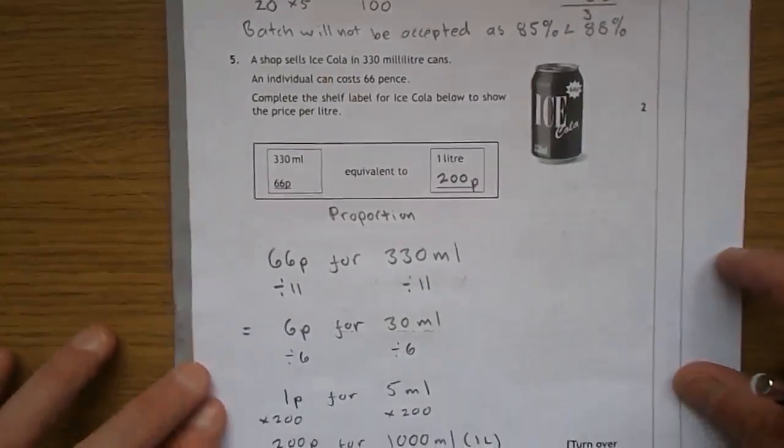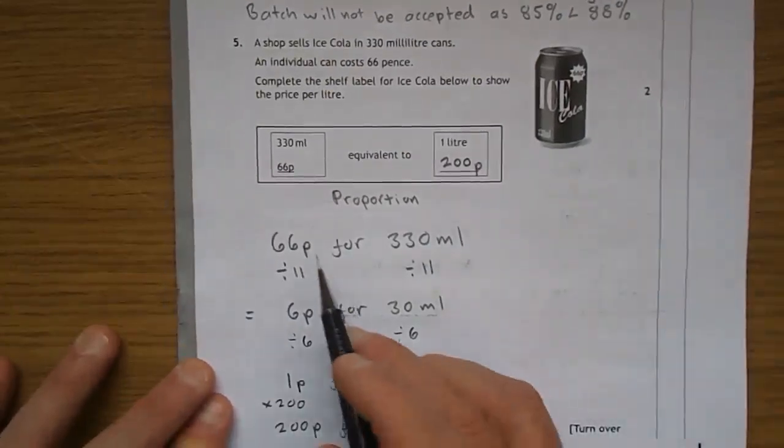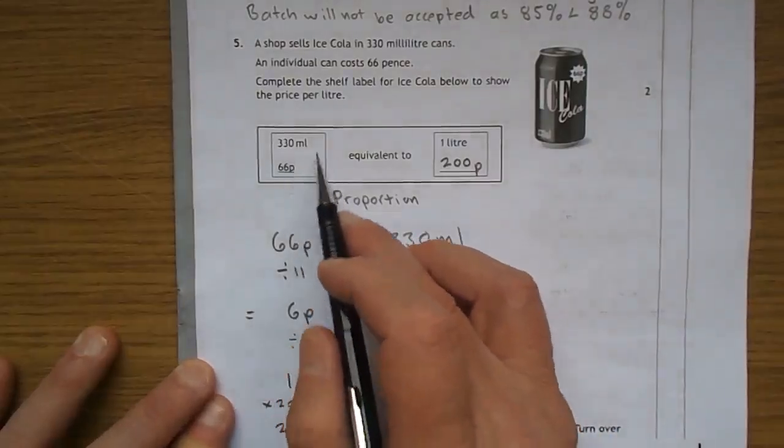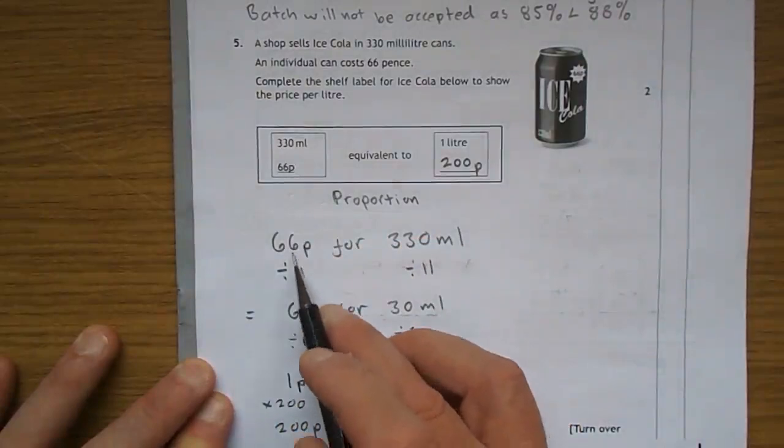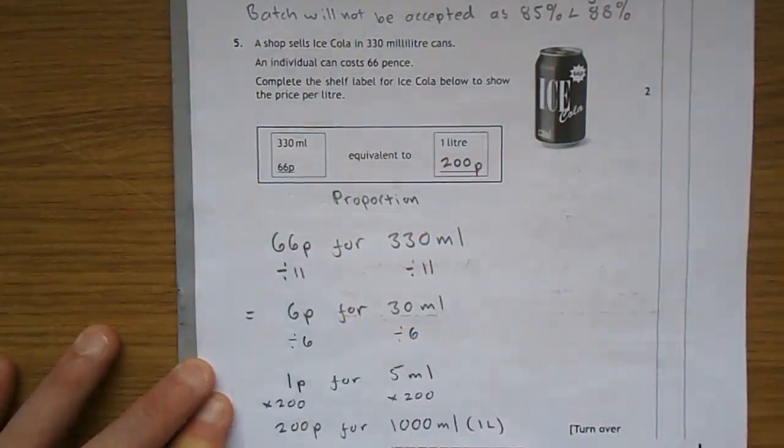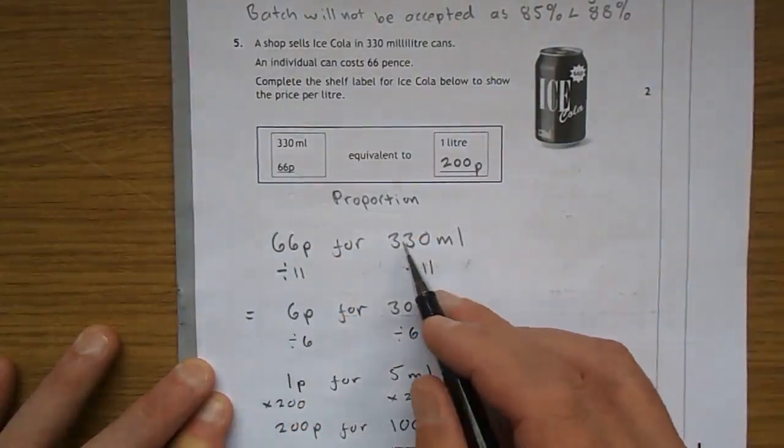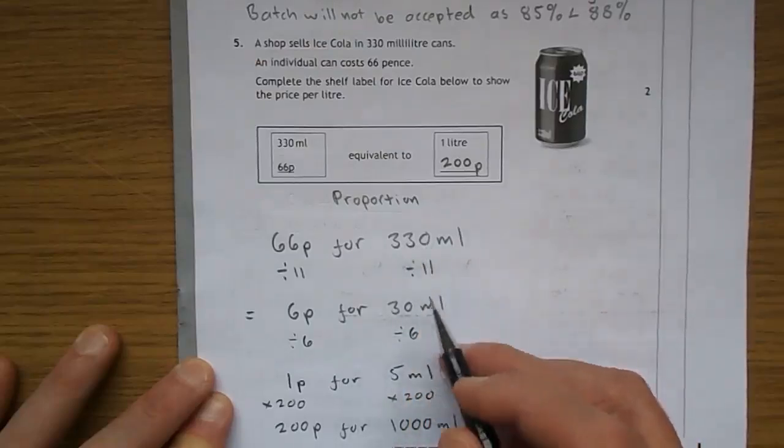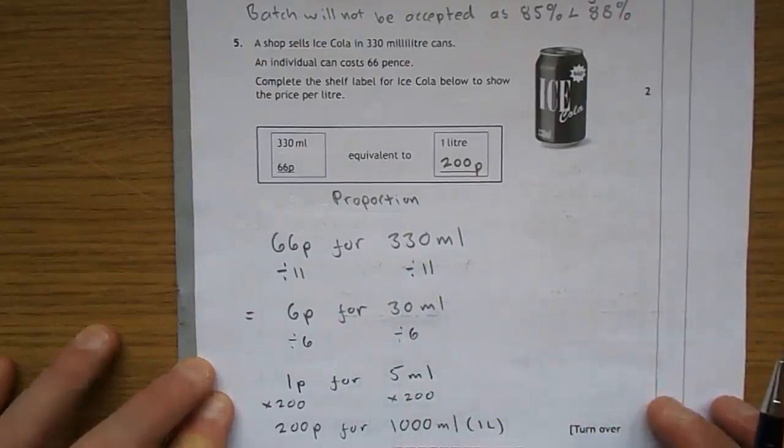This is just a proportion question. Start off 66p for 330 mils. I chose to divide by 11, 66 divided by 11 is 6, 330 divided by 11 is 30.